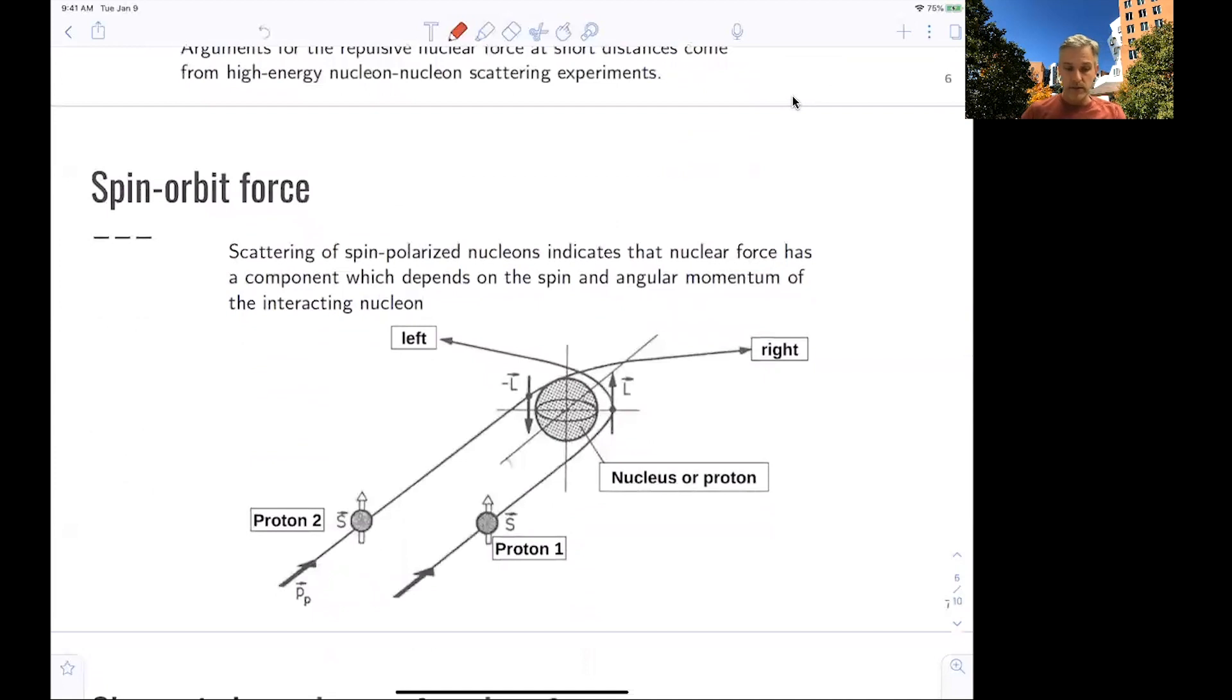On the spin orbit force, here, that's an area where we could go into much more detail. But for this introductory class, we will not. The scattering of spin polarized nucleons or other spin nuclei particles allows us to understand that the nuclear force has a component which depends on the spin and the angular momentum of the interaction.